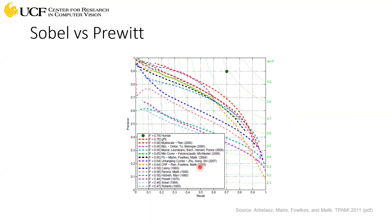A historical note: Sobel and Prewitt were proposed at essentially the same time — 1968 and 1970. In the 1960s, publishing was very slow: you had to print and mail papers, so a two-year gap could still mean they were developed simultaneously. That concludes Sobel and Prewitt. We have time remaining so we'll continue to the next topic.